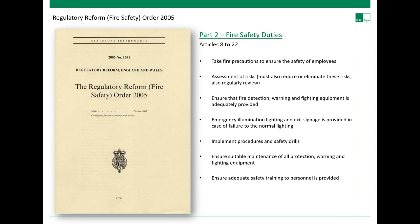Part two covers fire safety duties. The orders define duties of persons in control of premises — they have a duty under law to take fire precautions to ensure the safety of employees. This includes conducting risk assessments to eliminate risks, ensuring fire detection, warning and firefighting equipment is adequately provided, ensuring emergency lighting and exit signage is provided in case of failure to normal lighting, implementing procedures and safety drills, ensuring suitable maintenance of all equipment, and providing adequate safety training to personnel.